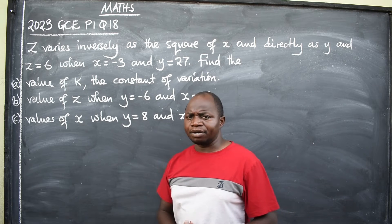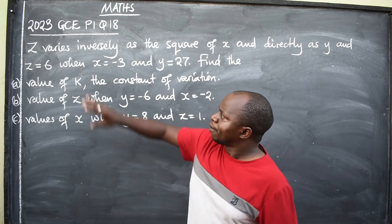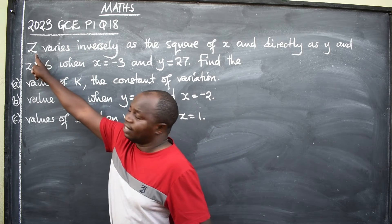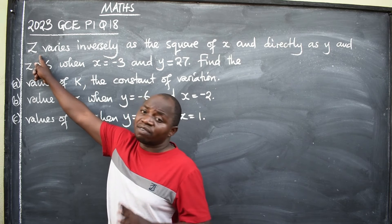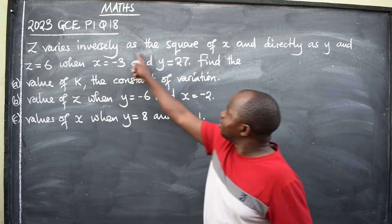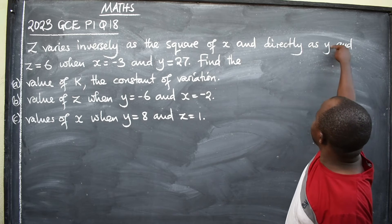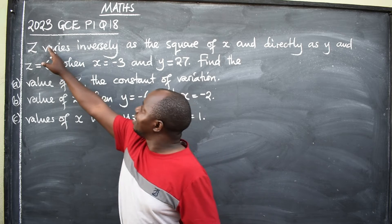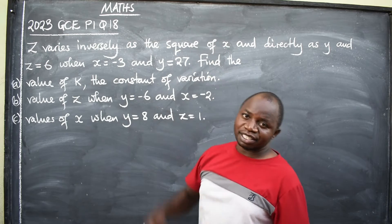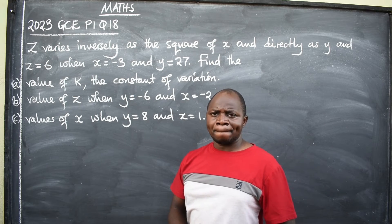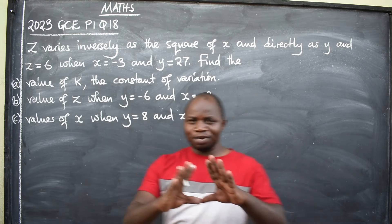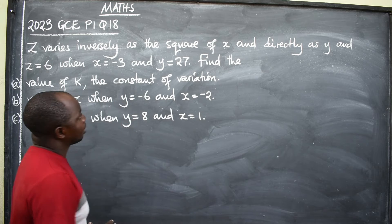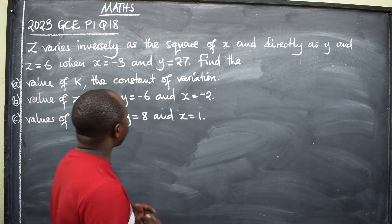The first thing you need to understand about variation is that there is a translation you have to do. From the statement to the end, this must be translated from sentence form into mathematical language. Be careful and pay attention so that you learn how to translate. Let's start.